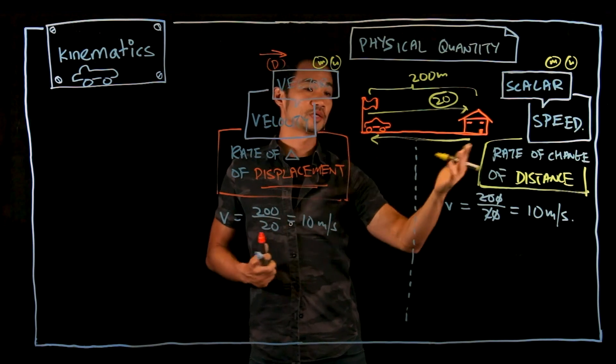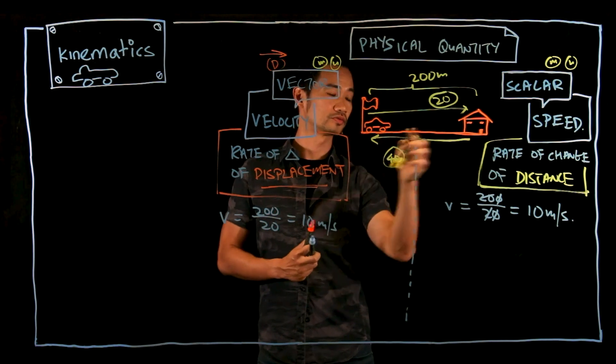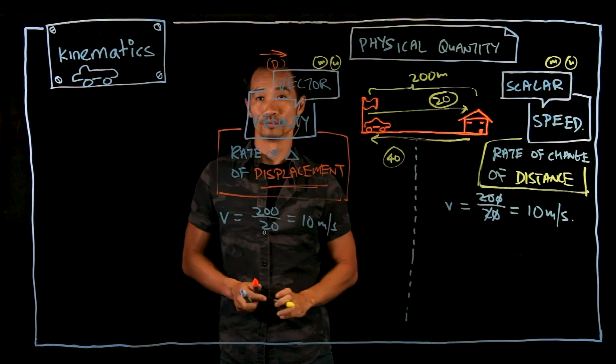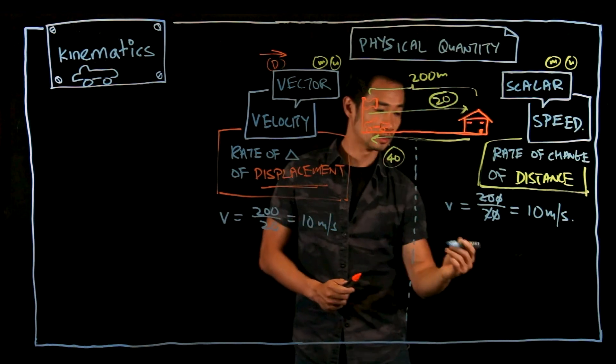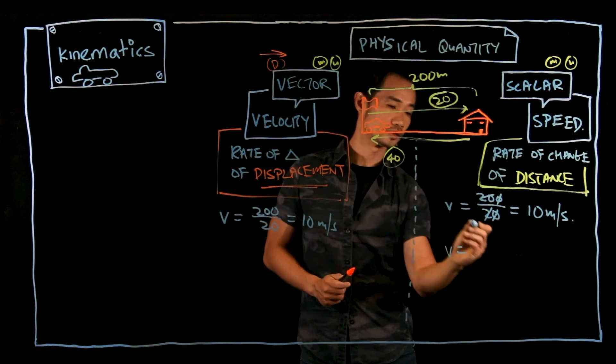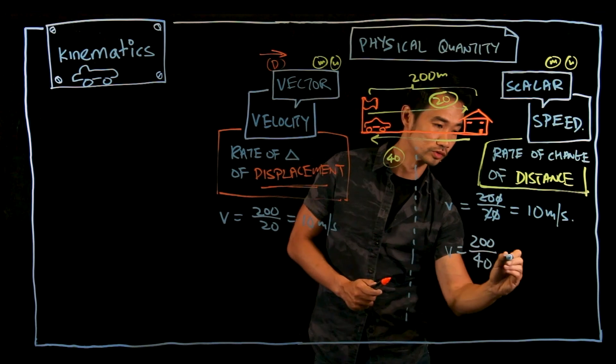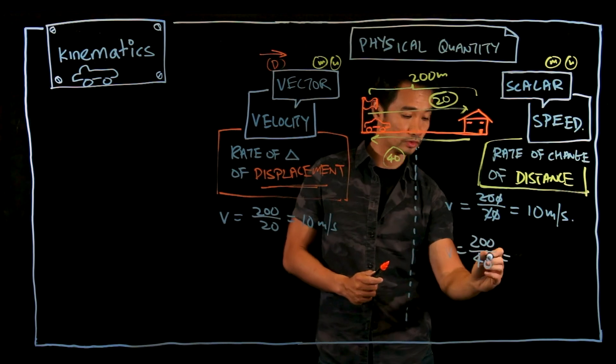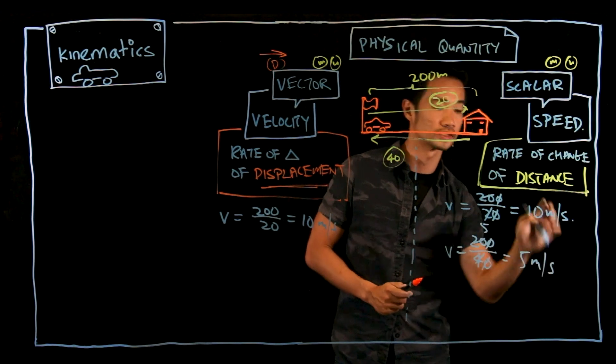And maybe the car takes now 40 seconds to reach from the house back to home. So the speed over here again, the change of distance is 200, time taken right now is 40. So you will get 200 over 40. You get 5 meters per second. That's your speed.